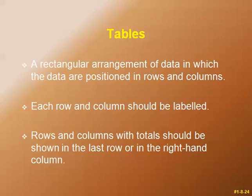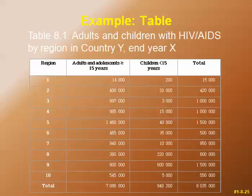Tables are a rectangular arrangement of data positioned in rows and columns. Each column should be labeled, and rows and columns with totals should be shown in the last row or the right-hand column. A basic example shows adults and children with HIV/AIDS by region for given years.